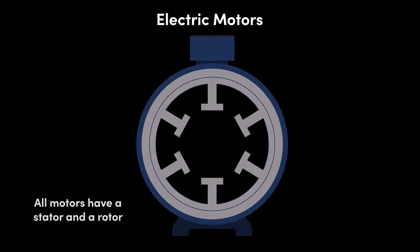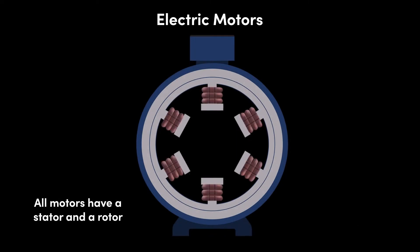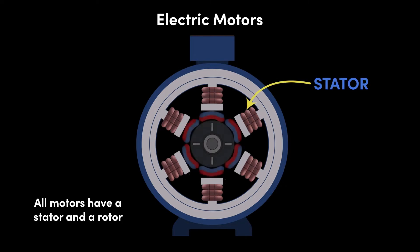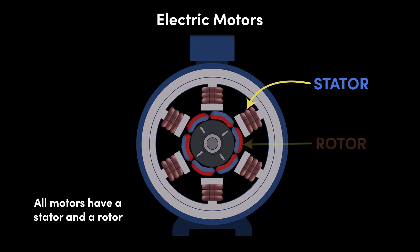They all have two key components. Number one, magnets or electromagnets which are stationary, which we call the stator, and number two, magnets or electromagnets which rotate, which we call the rotor.